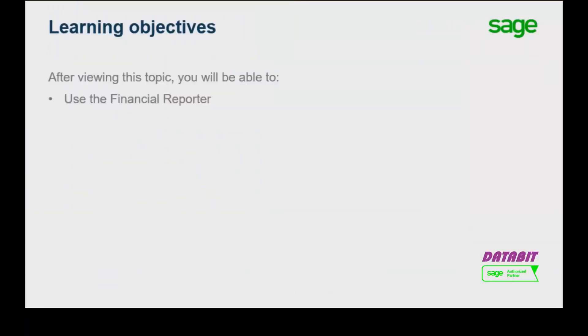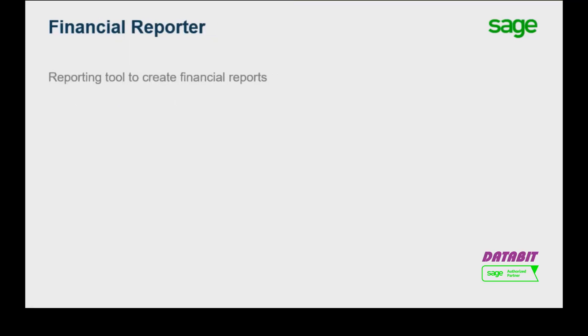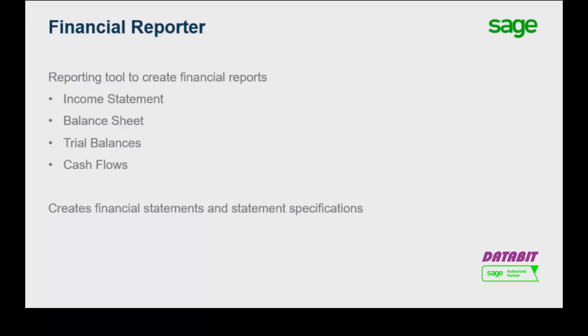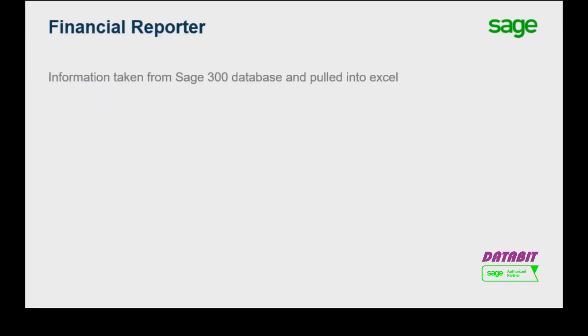Over the next few minutes we'll show you how to use the Financial Reporter in Sage 300. The Financial Reporter is a reporting tool used to create reports such as income statements, balance sheets, trial balances, and cash flows. You can use the Financial Reporter to create financial statements and statement specifications in Microsoft Excel that display data from Sage 300's general ledger.